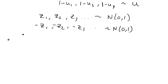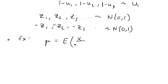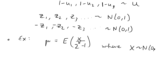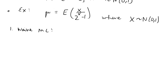To show how antithetic variates can reduce variance, I'll use an example. I want to estimate mu, which is equal to the expected value of x over 2 to the x minus 1, where x is normally distributed N(0,1). We're going to solve this using Monte Carlo sampling two ways: first with naive Monte Carlo, then with antithetic variates.